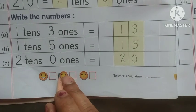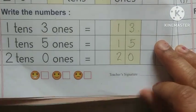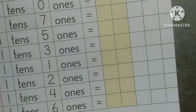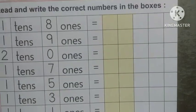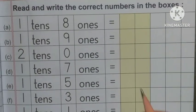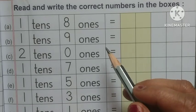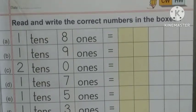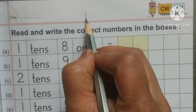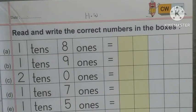तो इसी तरह से आपको class work करना है। अब next page में आपको homework है — इसी तरह से आपको लिखना है, थोड़ा सा change है इसमें। यहाँ पर tens और ones place में दिया गया है और आपको यहाँ पर numbers लिखना है। Okay तो यह आपका homework है — यहाँ पर आप homework लिखिए और date जरूर डालें। Okay students.